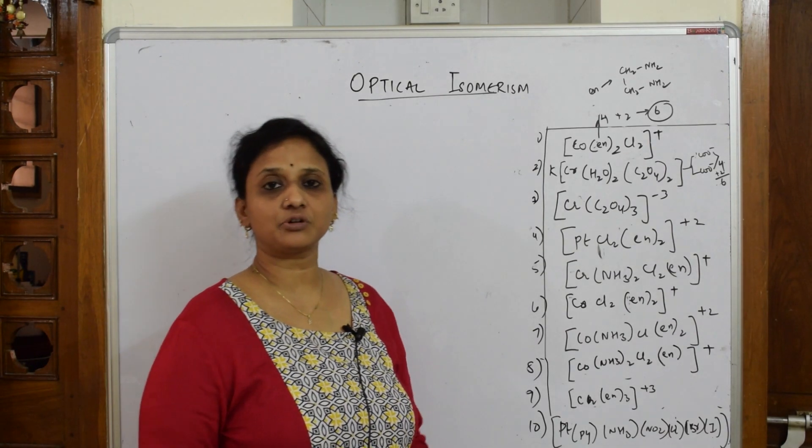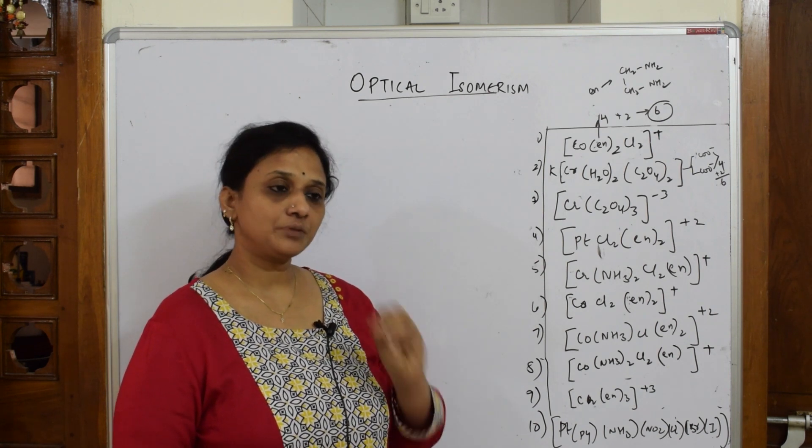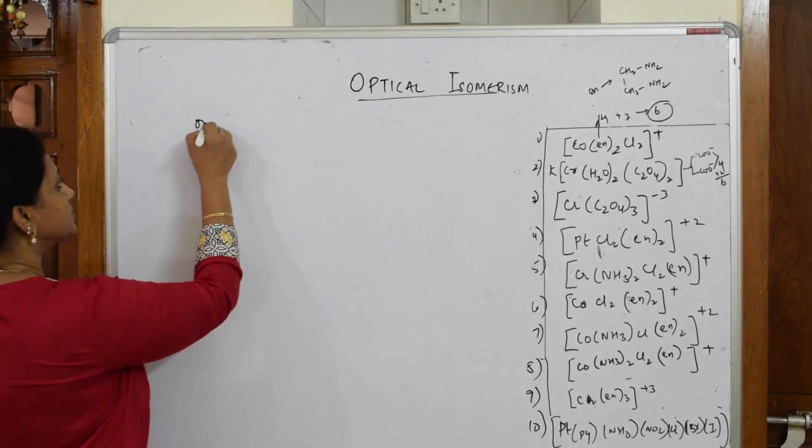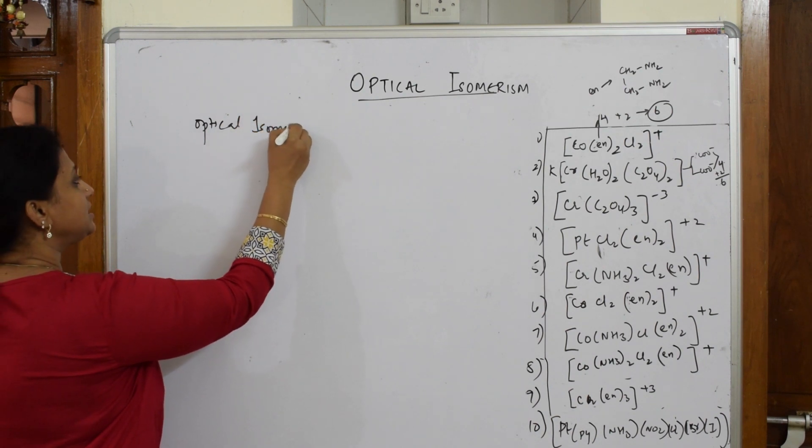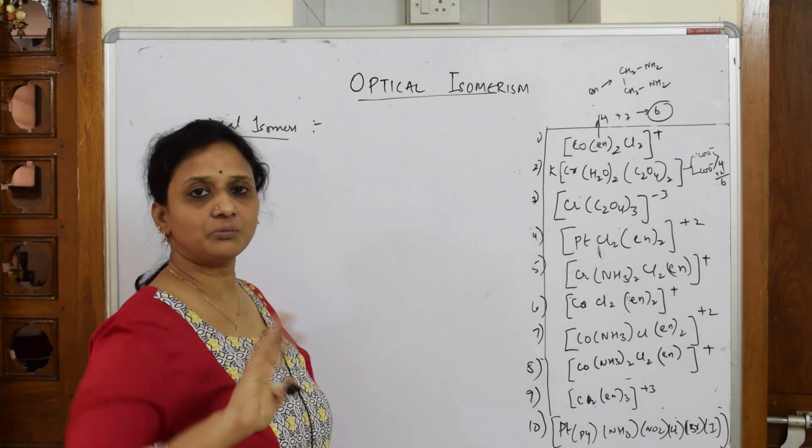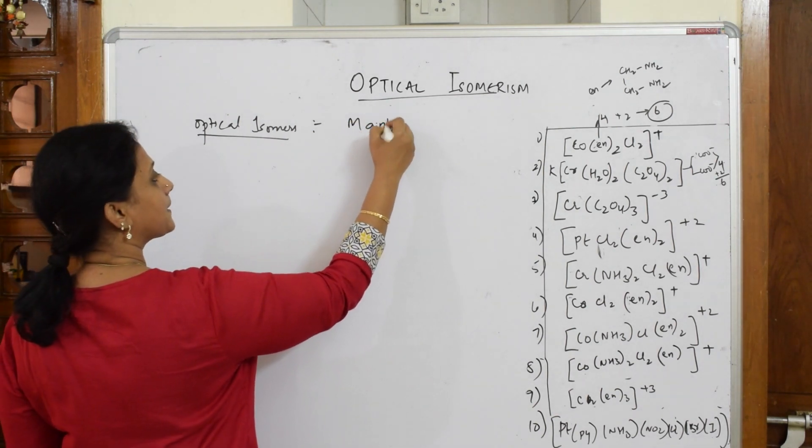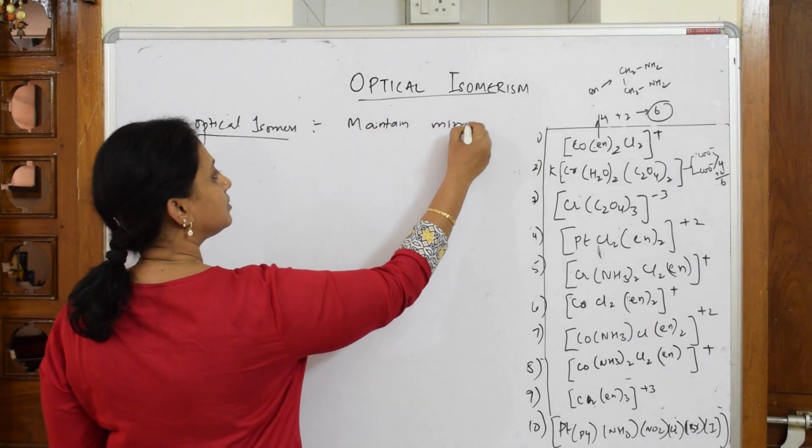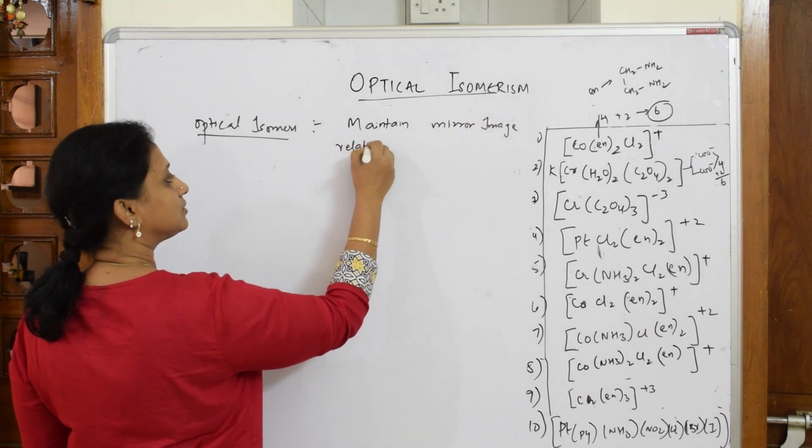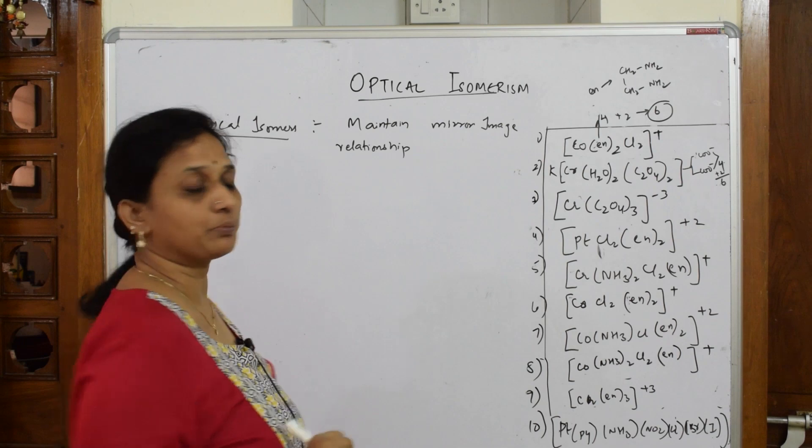We've already discussed the criteria for optical activity. Now let's start with the following example. What actually is optical isomerism? Optical isomers are those - first important thing - they maintain isomers means two units like one of the same molecular formula, different structural arrangement. So optical isomers are those which maintain mirror image relationship.